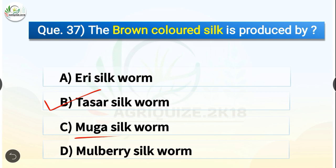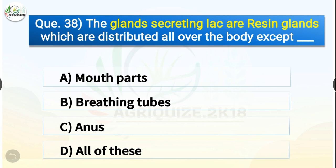Question number thirty-eight: The glands secreting lac are resin glands which are distributed all over the body except dash. The options are mouthparts, breathing tubes, anus, or all of these. The correct answer is option D — all of these. The resin glands secreting lac are distributed all over the body except mouthparts, breathing tubes, and anus.